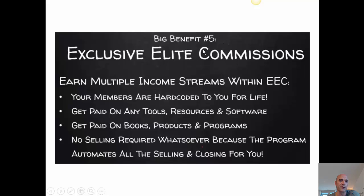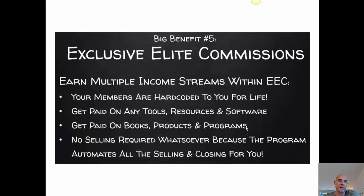Benefit number five is exclusive elite commissions that earn multiple income streams within EEC. Your members are hard-coded to you for life. You get paid on any tools, resources and software, on books, products and programs — and no selling is required. That means in your 100 emails, if Chuck decides to promote a product on JVZoo or wherever on, say, day five, it will be promoted via your link in your autoresponder, so you will earn another commission there.